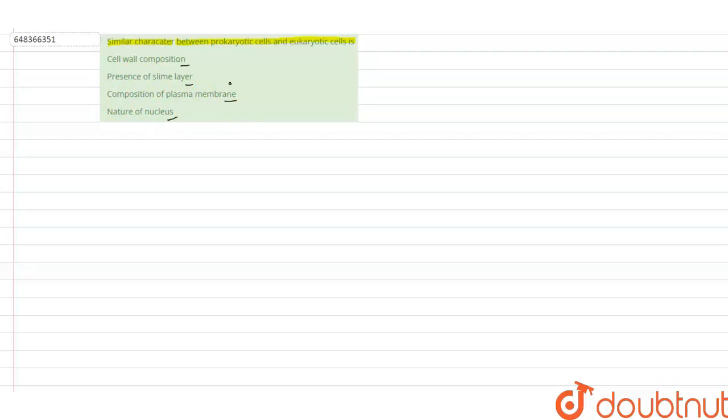The question is asking us to find the similar character among the following options between prokaryotic cells and eukaryotic cells. Let's go from option 1. Cell wall composition. As we all know, cell wall is not found in animal kingdom, but it's found in kingdom fungi and kingdom plantae.